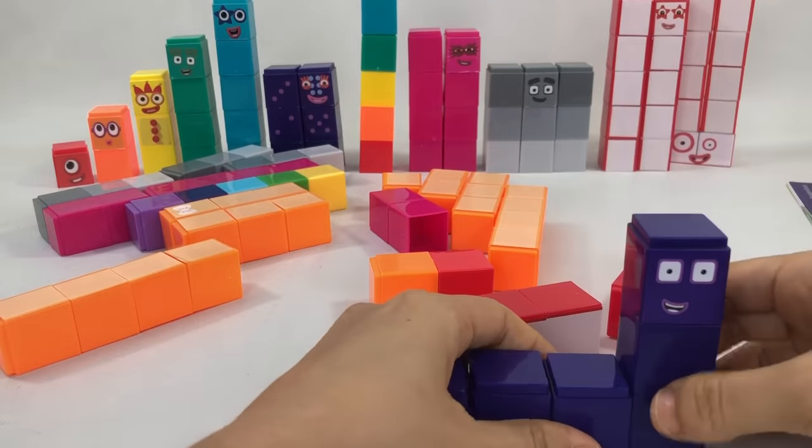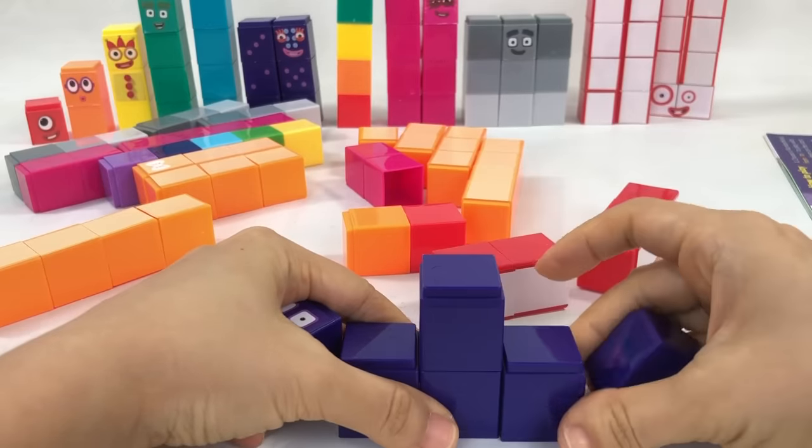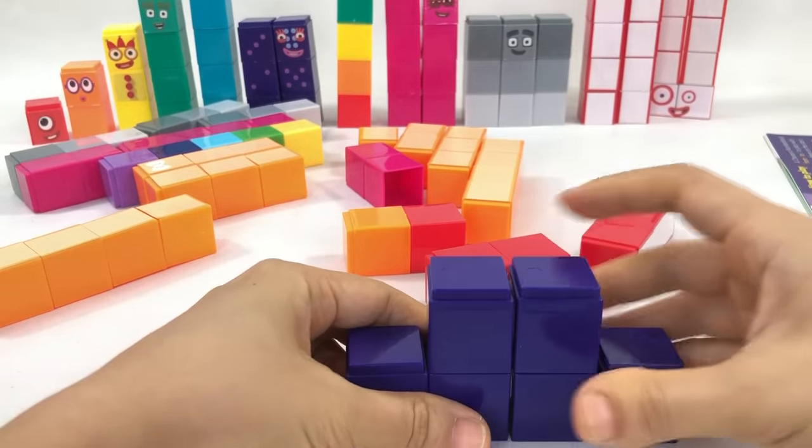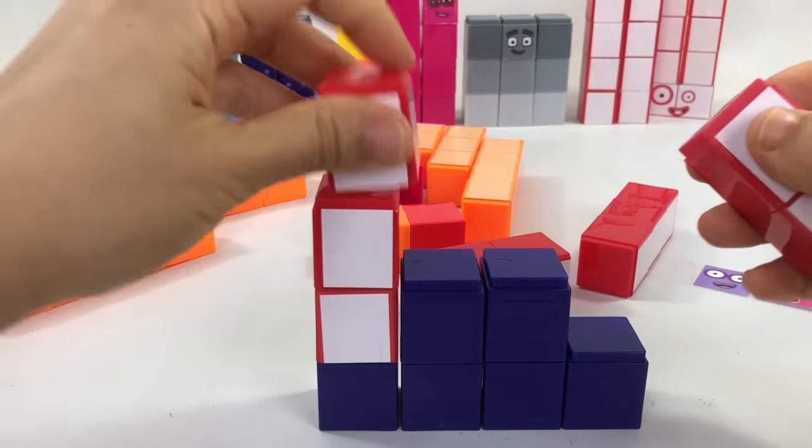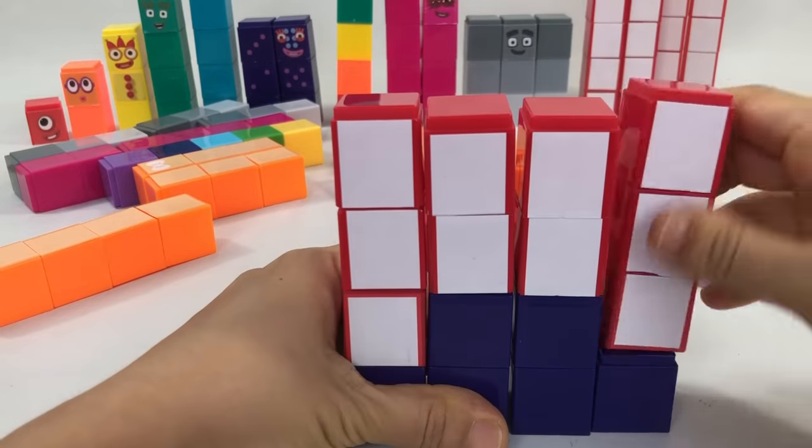But wait, number block 16 is a square. So we like to build her like this. Can you guess what shape? That's right, a square. This is how she usually appears in the show. Because number block 16 is a member of the square club.